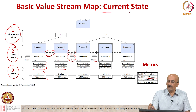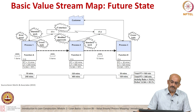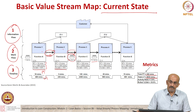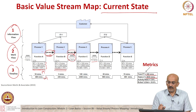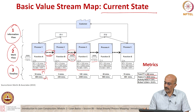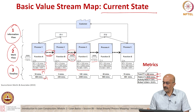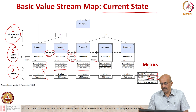So here you can see the basic value stream map showing the current state. Now regarding the percentage complete and accurate — that is the percentage of accuracy. So 50 percent is complete and accurate, 50 percent is not. Here 70 percent is complete and accurate, 25 percent is not. Here 85 percent is complete and accurate and 15 is not. The next metric, 3.9 percent, is the ratio — that is 180 divided by 4,615. And the percentage complete and accurate overall is the product of all the individual percentages.